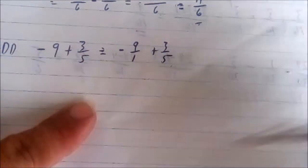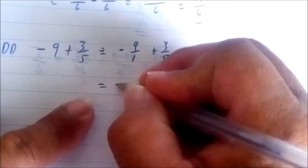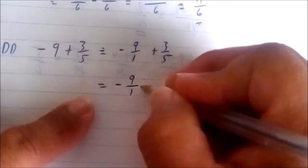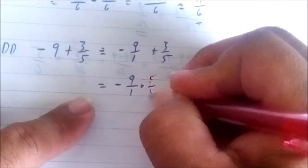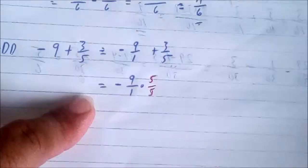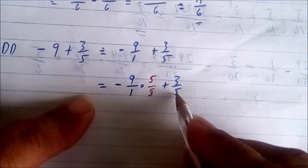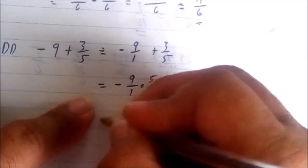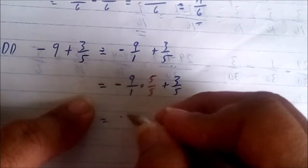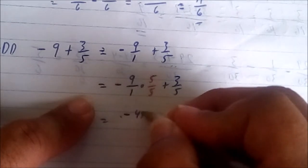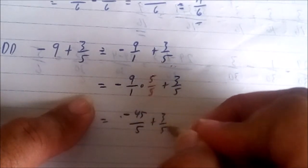So I want to multiply here by 5 to get them equal to have the same denominator. So I have negative 9 over 1 times 5 over 5, then plus 3 over 5. Well I won't need to multiply this because this is already in the same denominator. So negative 9 times 5 gives me negative 45 over 5 plus 3 over 5.